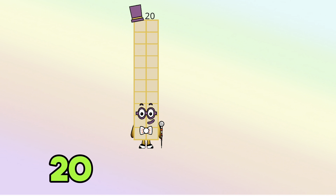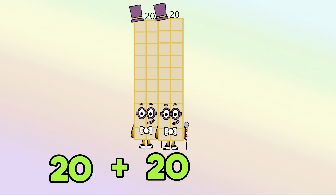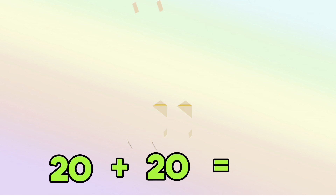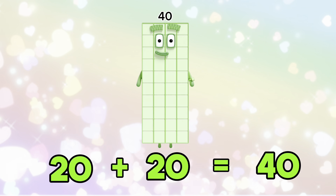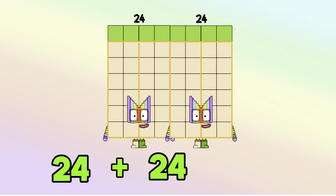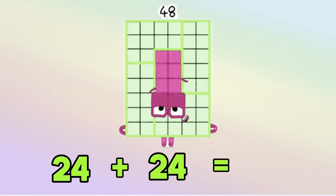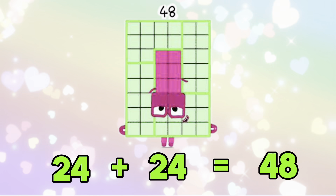20 add 20 is equals to 40. 24 add 24 is equals to 48.